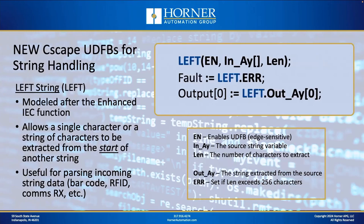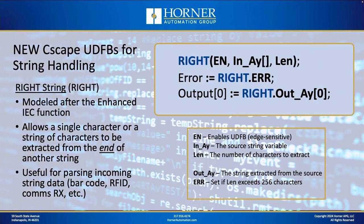Similarly, we have the left UDFB, which extracts characters from the beginning of a string. It has enable, input array, and length inputs, but no position since it always starts from the left. And there's also the right UDFB, which grabs a specified number of characters from the end of the string, returning them in proper order.